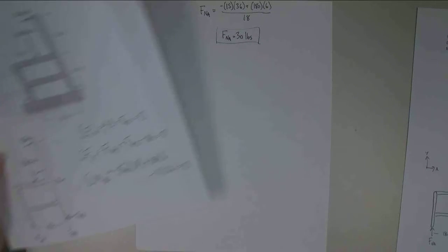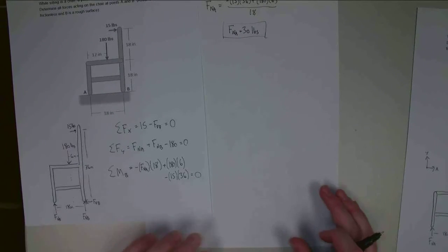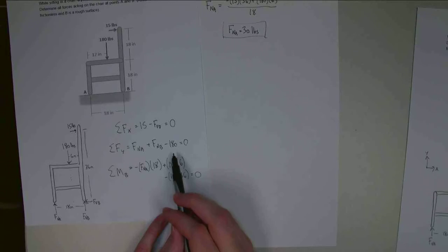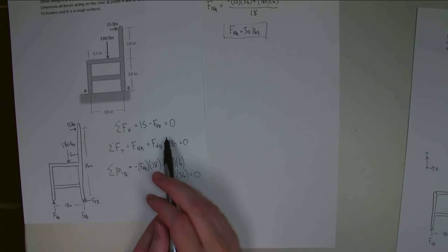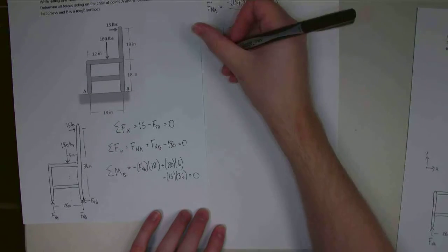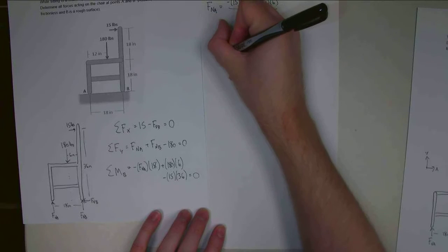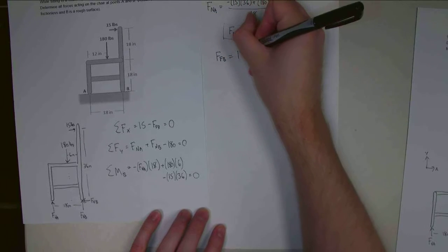Alright, next one is going to be F_FB. We look at the sum of forces in the x equation. And that one is very simple. It's just F_FB is going to be equal to 15 pounds.